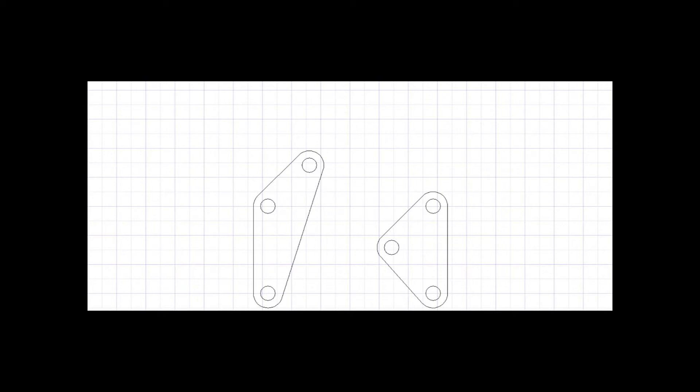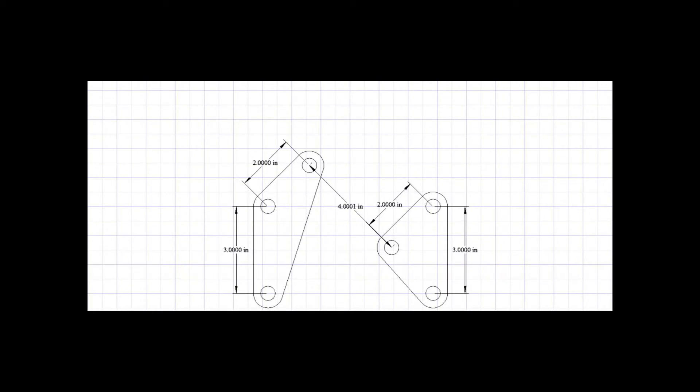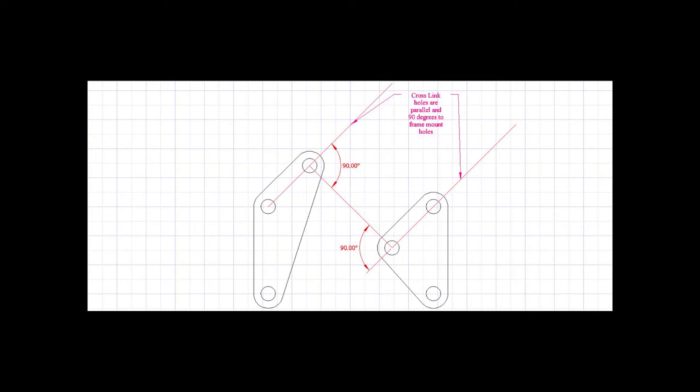Here's some drawings of what my brackets look like and this is just the measurements that I have on mine. It doesn't have to be like that, but make sure that you have your links 90 degrees in parallel if you want your axle to be most accurate.